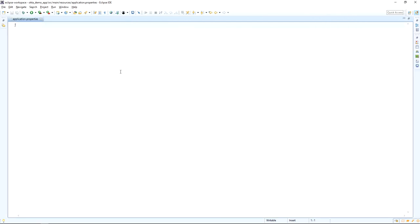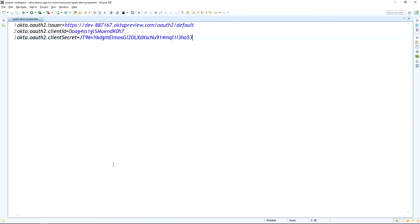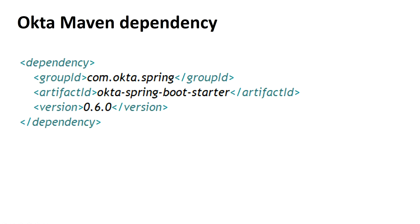You can find the application.properties file under src/main/resources directory. In the application.properties file I added my Issuer URL, Client ID, and Client Secret. After adding the Okta properties, we need to add one more Maven dependency in the pom.xml file — that dependency is called the Okta Spring Boot Starter dependency. Now I am going to add this dependency in the pom.xml file.